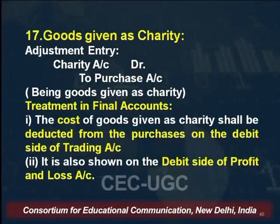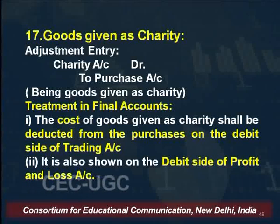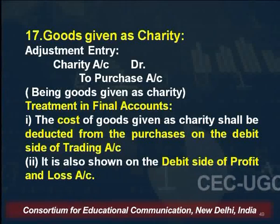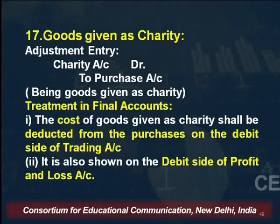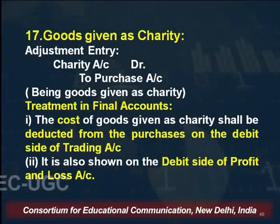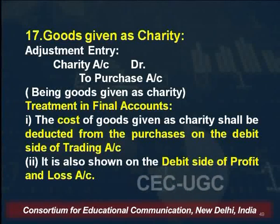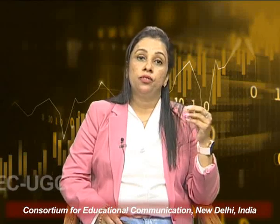The next adjustment related to goods is when goods are given as charity. Sometimes businesses distribute goods for social causes, but for the business it is a loss. According to the nominal account rule, charity account is debited and purchase is credited — since goods are reduced. In the final accounts, this is shown on the debit side of the trading account by deducting from purchases, or on the credit side of the trading account. Since charity is a loss, it is also shown on the debit side of the profit and loss account. Remember: all adjustments given outside the trial balance will have at least two effects.